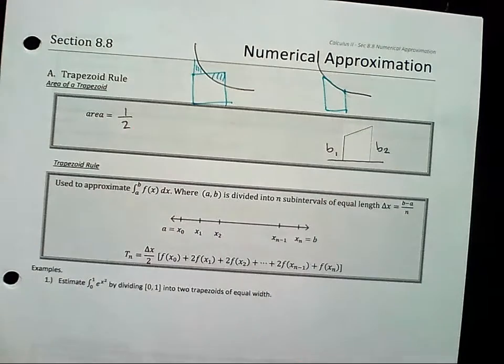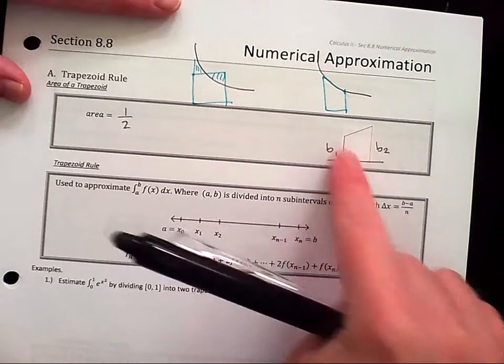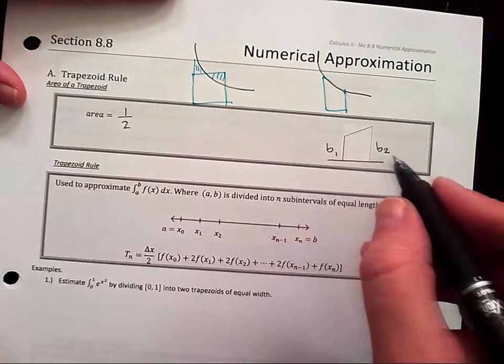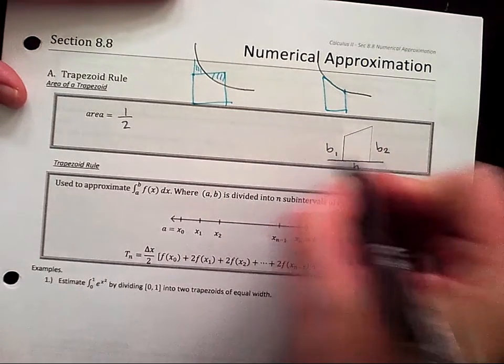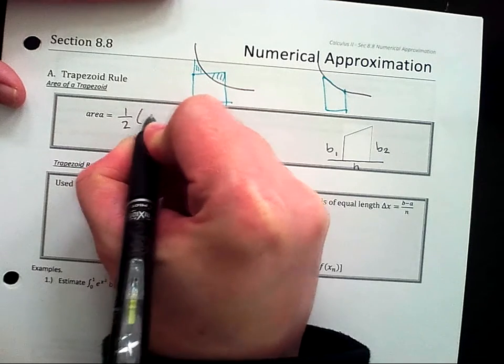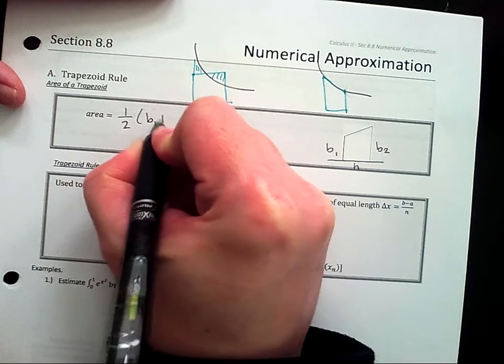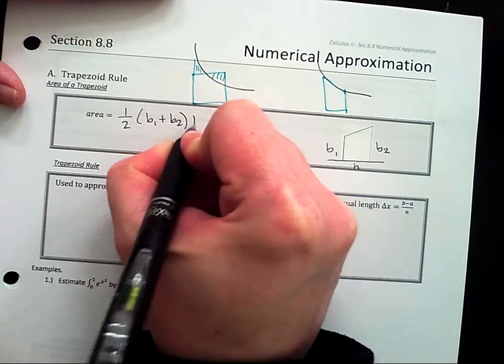Usually you see the trapezoid the other way, right? But we want to do it with the x, y axis. And then we'll call this the height. So one half, base one, plus base two, times the height. Okay, good.